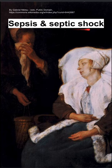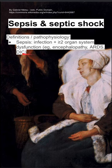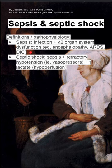Here are some notes on sepsis and septic shock. First, some definitions. Sepsis is when you have infection plus dysfunction in at least two organ systems. This can be encephalopathy in the brain, ARDS in the lungs, or disseminated intravascular coagulation in the blood.